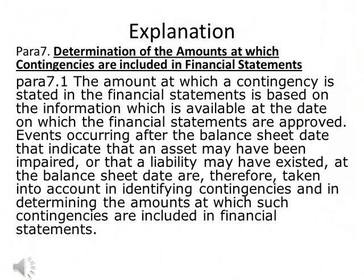Paras 7. Determination of the amounts at which contingencies are included in financial statements. Paras 7.1: The amount at which a contingency is stated in the financial statements is based on the information which is available at the date on which the financial statements are approved. Events occurring after the balance sheet date that indicate that an asset may have been impaired or that a liability may have existed at the balance sheet date are therefore taken into account in identifying contingencies and in determining the amounts at which such contingencies are included in financial statements.